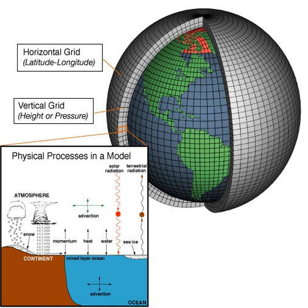Three-dimensional GCMs apply discrete equations for fluid motion and integrate these forward in time. They contain parameterizations for processes such as convection that occur on scales too small to be resolved directly. A simple general circulation model consists of a dynamic core that relates properties such as temperature to others such as pressure and velocity. Examples are programs that solve the primitive equations, given energy input and energy dissipation in the form of scale-dependent friction, so that atmospheric waves with the highest wavenumbers are most attenuated. Such models may be used to study atmospheric processes, but are not suitable for climate projections.